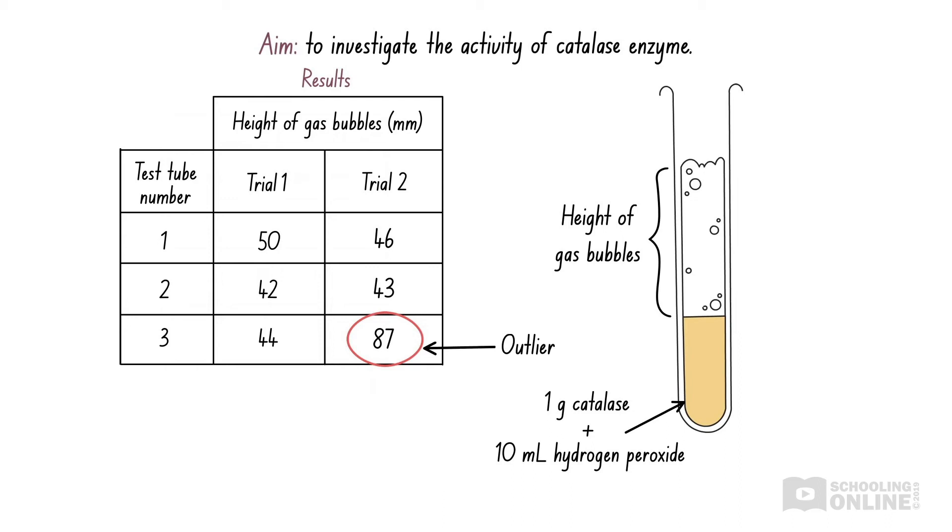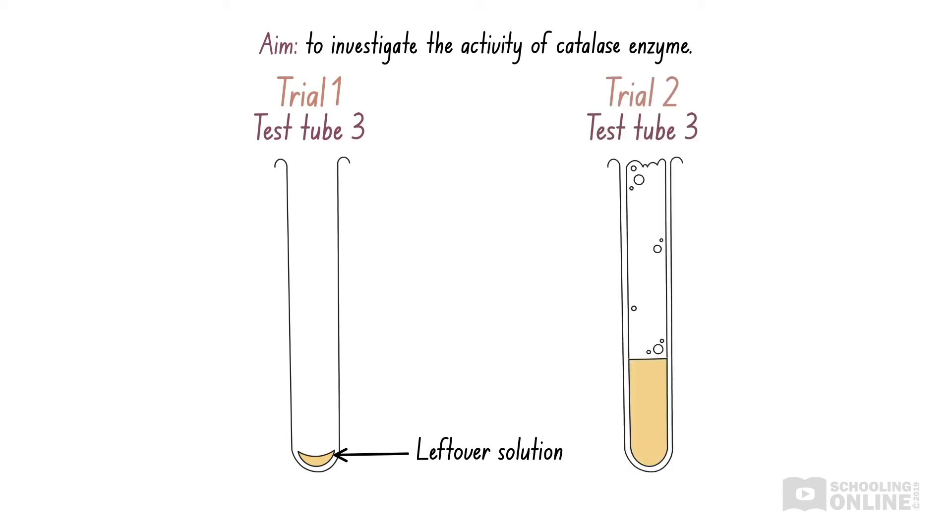Why did this occur? Perhaps we did not clean the third test tube thoroughly after the first trial. If so, there may have been some residual hydrogen peroxide in the test tube when we reused it for the second trial. This means that there was more hydrogen peroxide available for catalase to break down. Hence, we would observe a much greater level of catalase activity through the production of a taller column of gas bubbles. In any case, we should ignore this outlier when performing calculations.